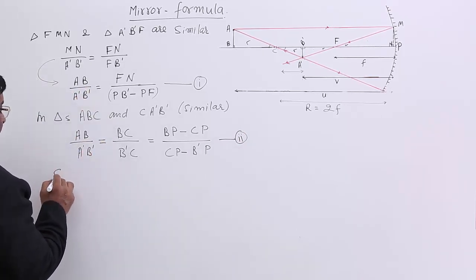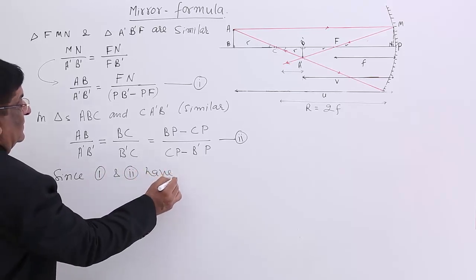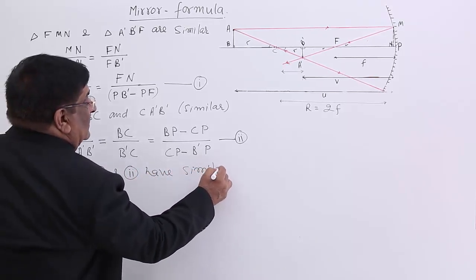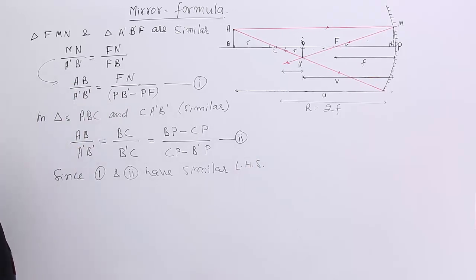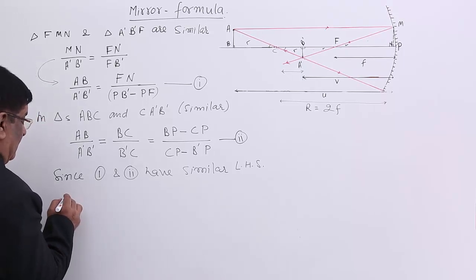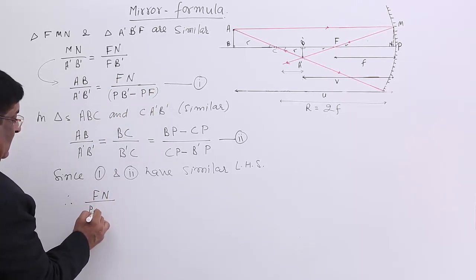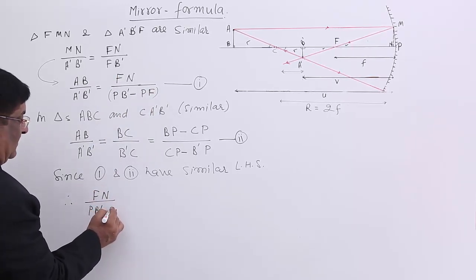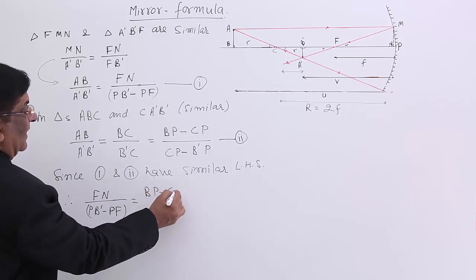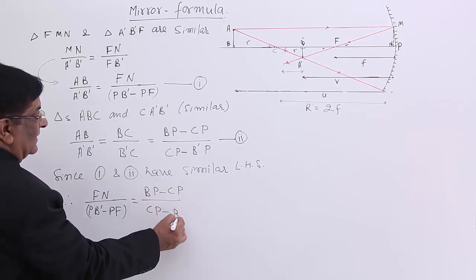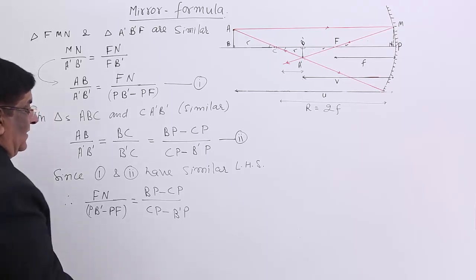Now equations 1 and 2 have a similar left-hand side. Therefore, the RHS will also be equal. Therefore: FN upon (PB' − PF) is equal to (BP − CP) upon (CP − B'P). This is the geometrical relation we have got, and after that let us put in the values.